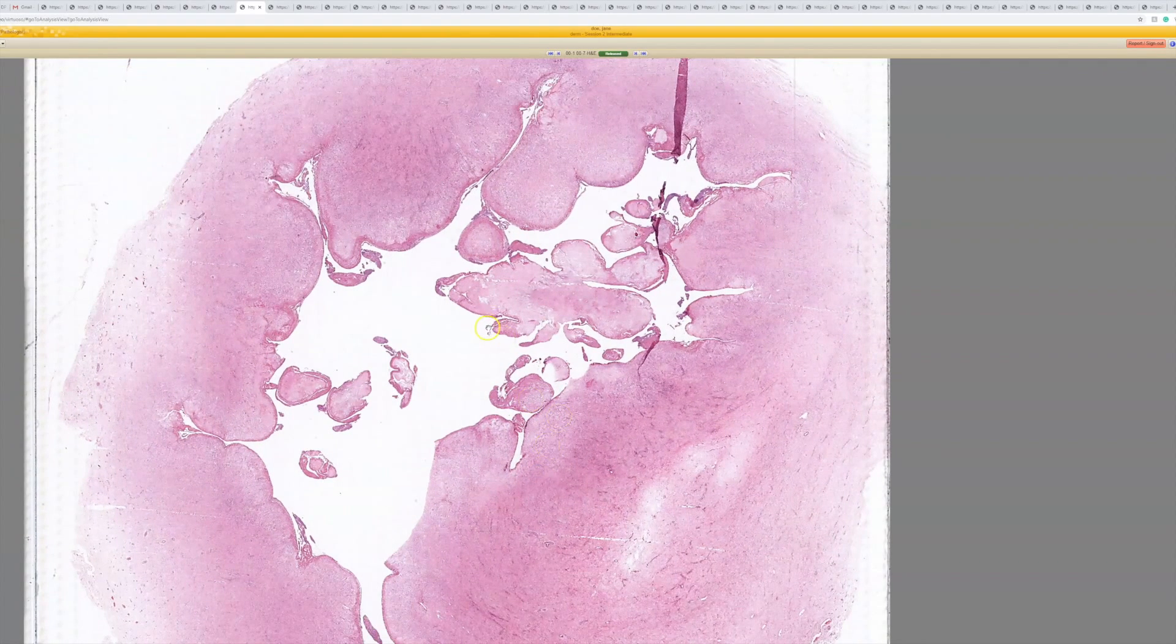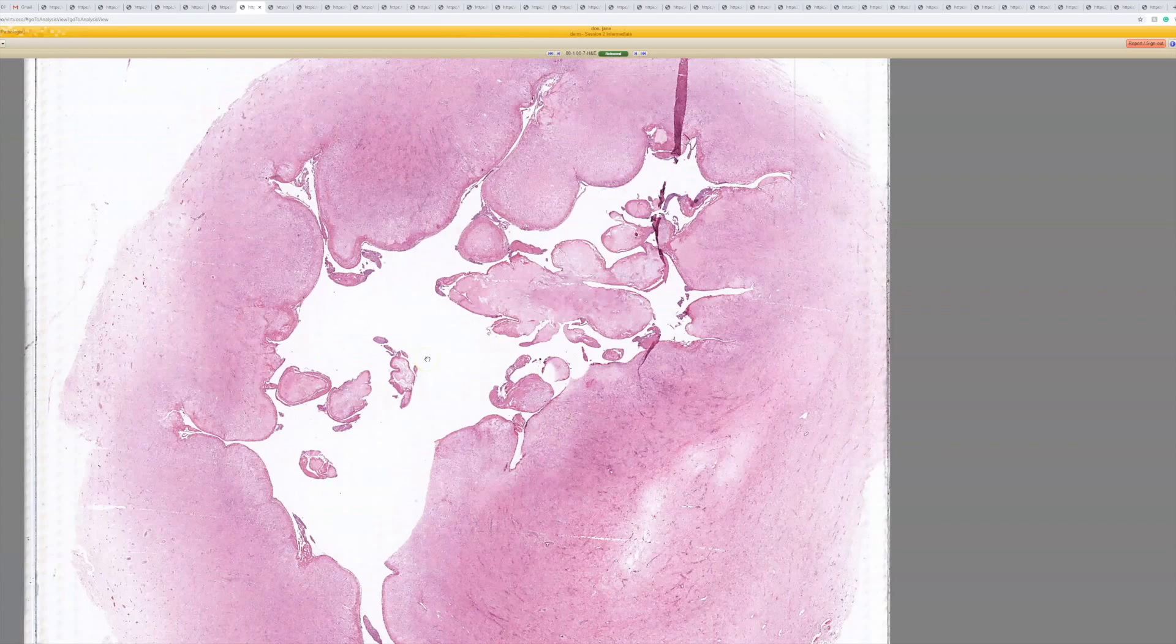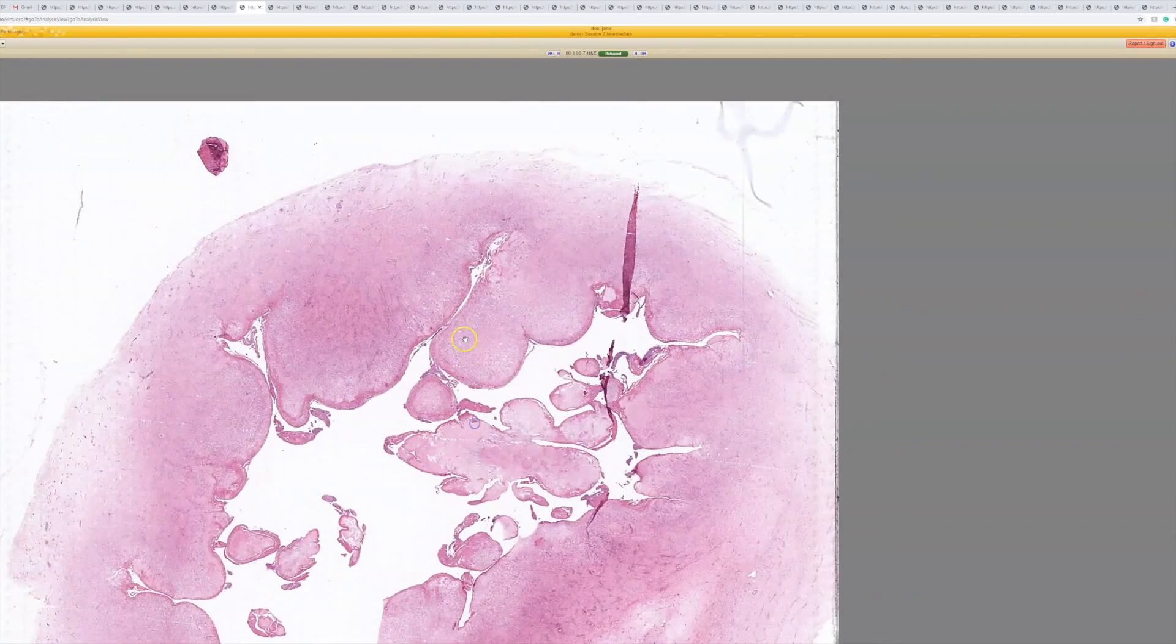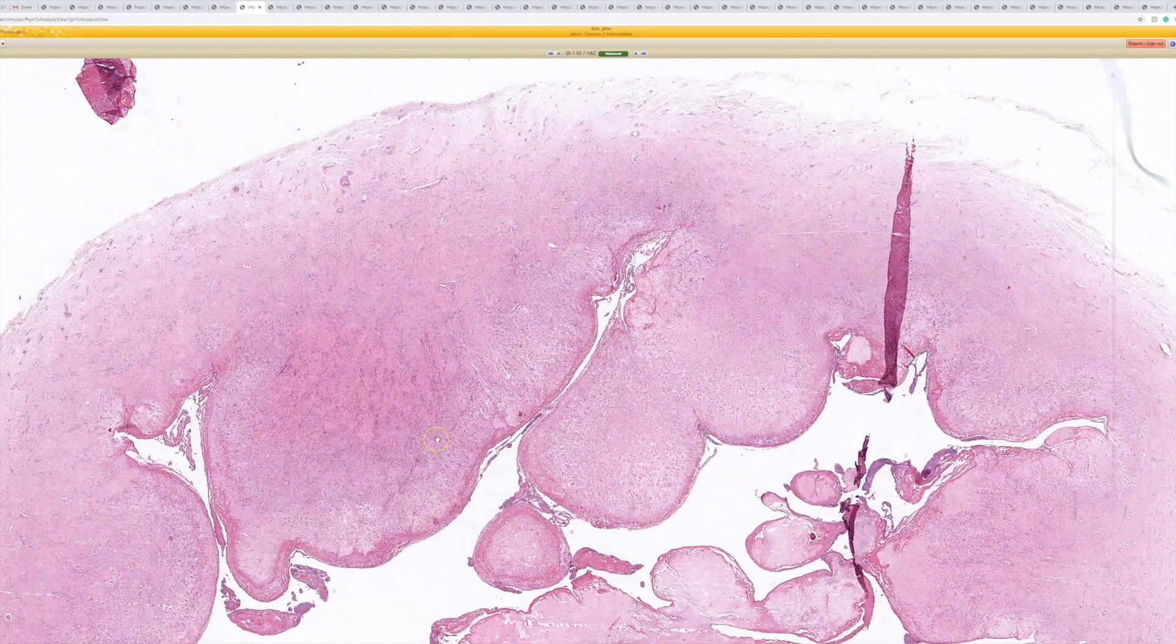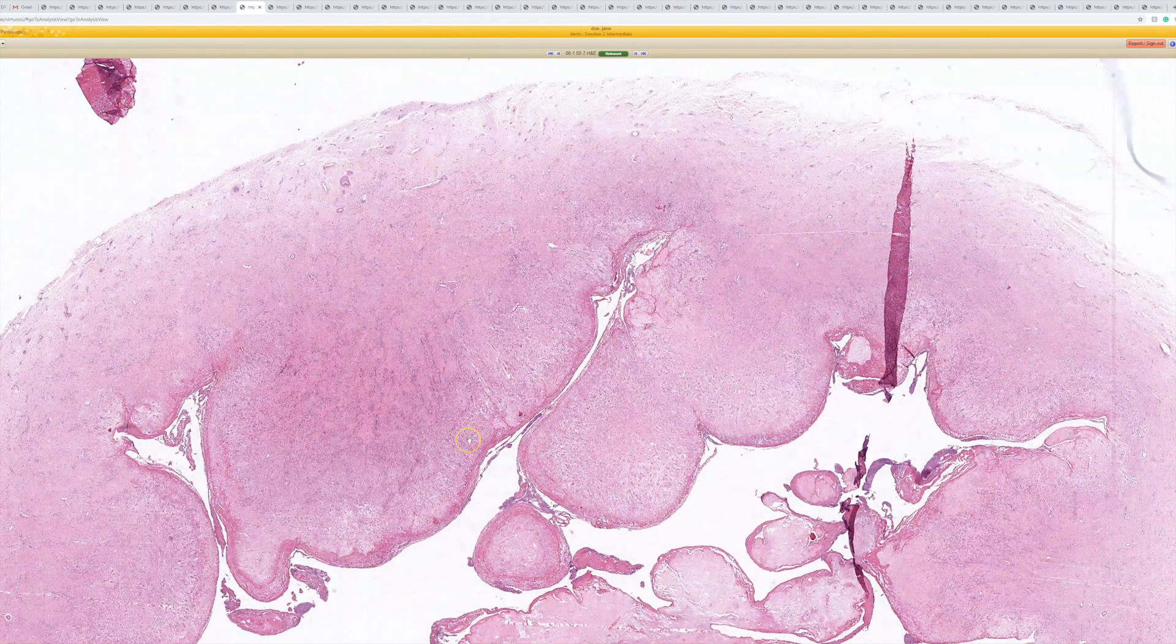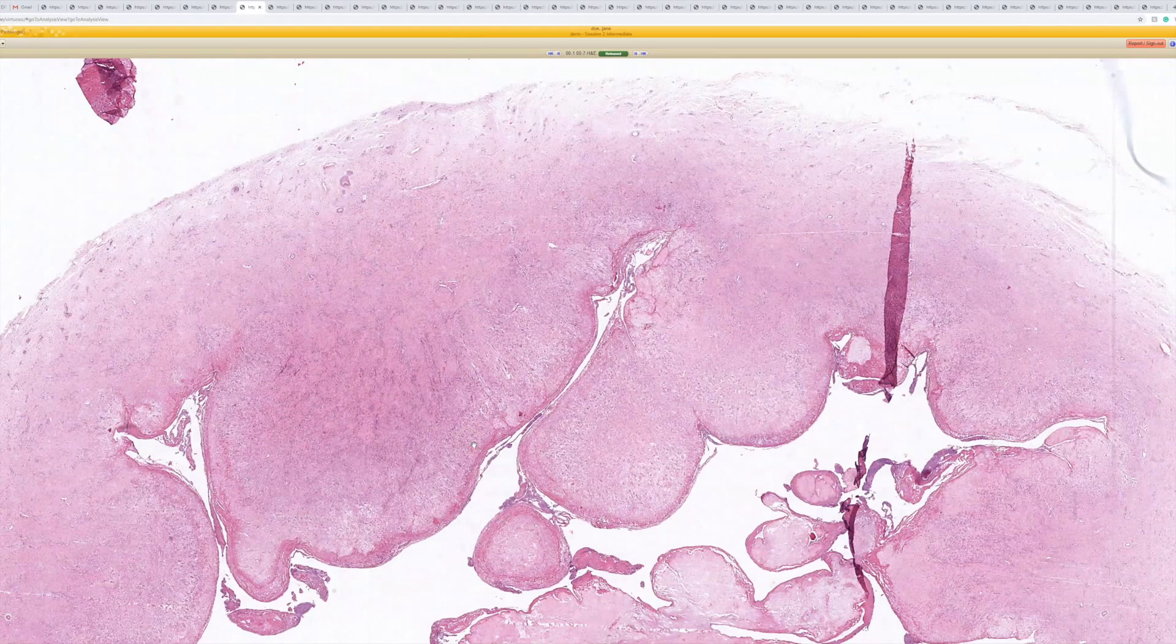I thought what fit best was a metaplastic synovial cyst that would probably work too actually. This is, I know these are all Dr. Ferringer's slide set, so these are all new to me. I just basically looked at them today.